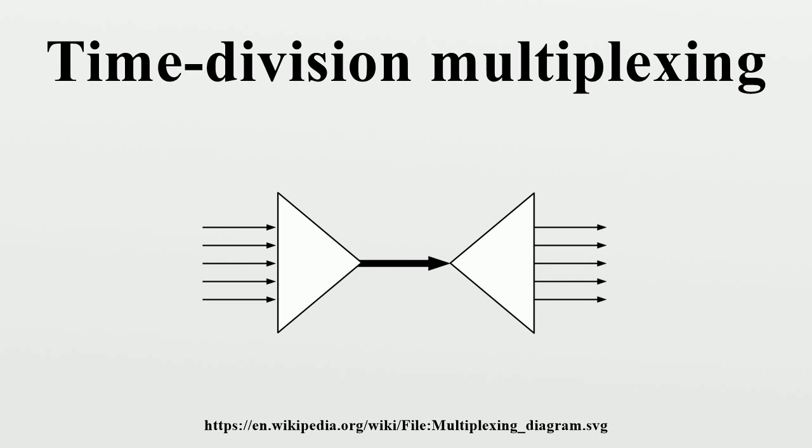This creates multiplexes with a bandwidth of N times 64 kbit per second, where N equals 120, 480, 1920, etc.